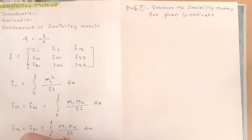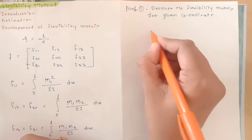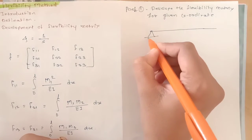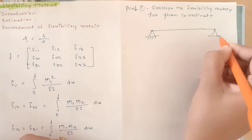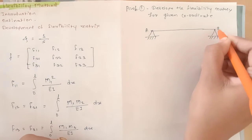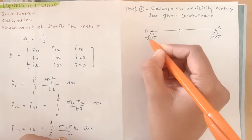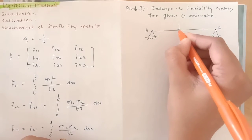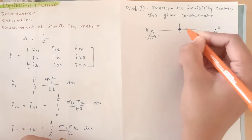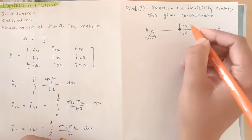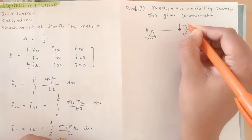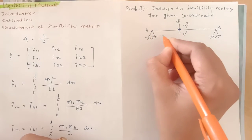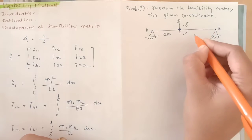Develop the flexibility matrix for the given coordinates. The given diagram shows points A, B, and C, where support A is a hinge support and B is also a hinge support. At point C, there is a point load and a couple moment. The distance from A to C is 2 meters, and from C to B is 3 meters.